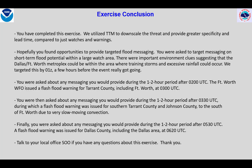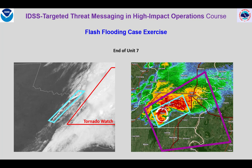You were asked about any messaging you'd provide during the 1-2 hour period after 2Z. The Fort Worth WFO issued a flash flood warning for Tarrant County, including Fort Worth, at 3Z. You were then asked about any messaging you would provide during the 1-2 hour period after 3:30Z, during which a flash flood warning was issued for southern Tarrant County and Johnson County to the south of Fort Worth, due to very slow-moving convection. Finally, you were asked about any messaging you would provide during the 1-2 hour period after 5:30Z. A flash flood warning was issued for Dallas County, including the Dallas area, at 6:20Z. Talk to your local office if you have any questions about this exercise. You have reached the end of Unit 7.